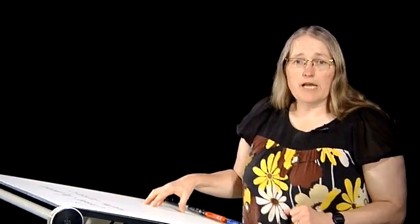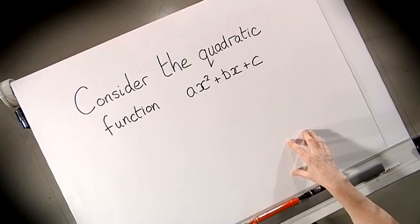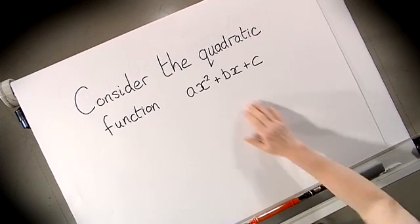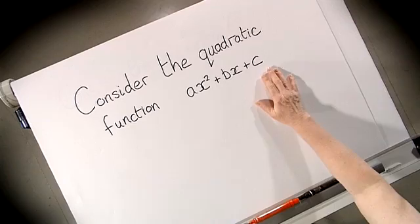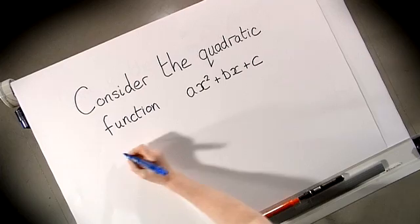So let's start by considering polynomials of degree up to two. Consider the quadratic function ax² + bx + c. I'm going to use my ABC method, so we're going to start by setting a equal to one.